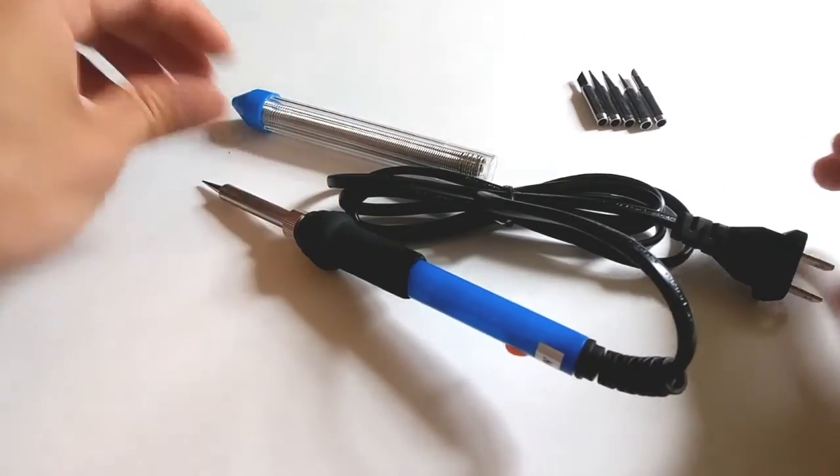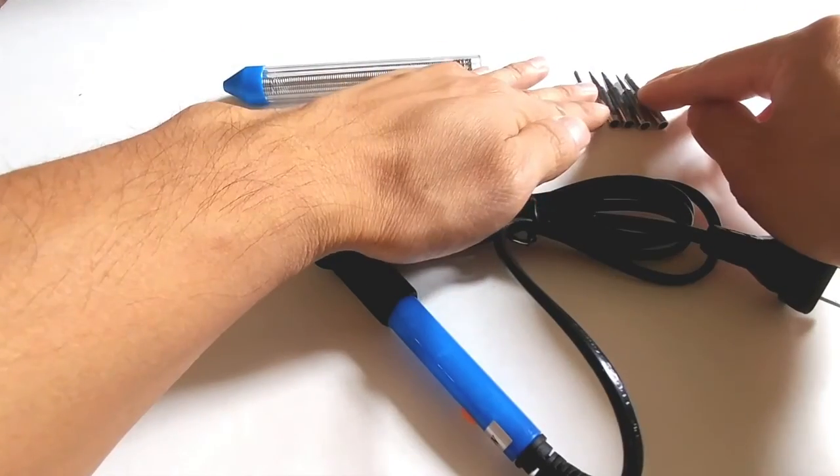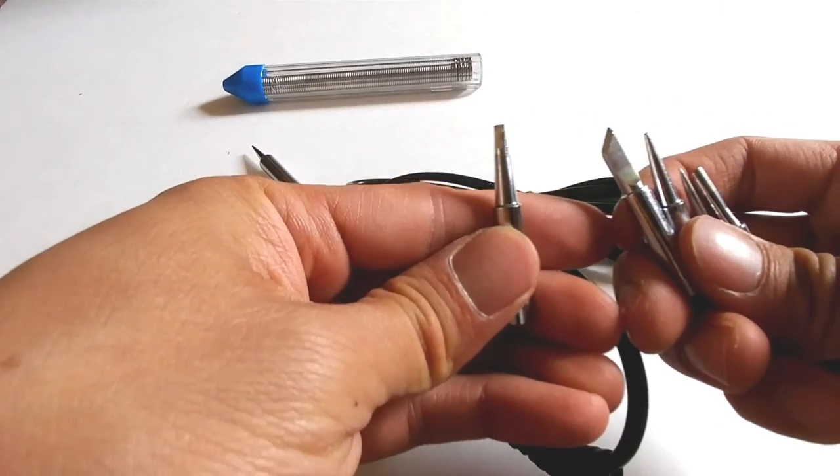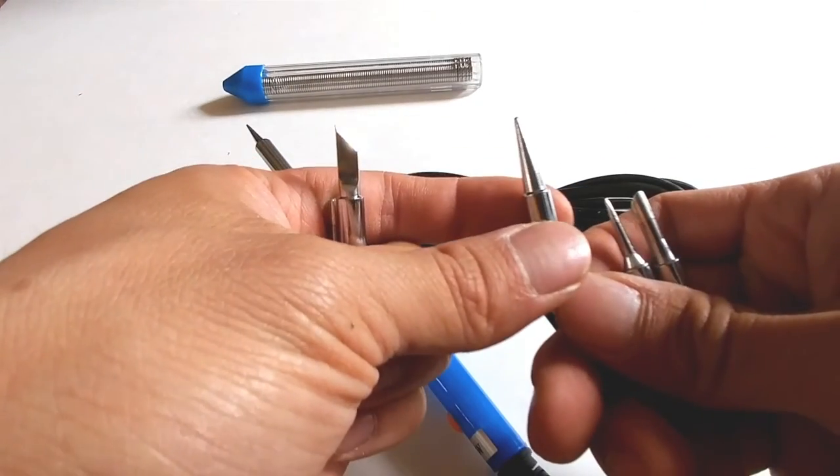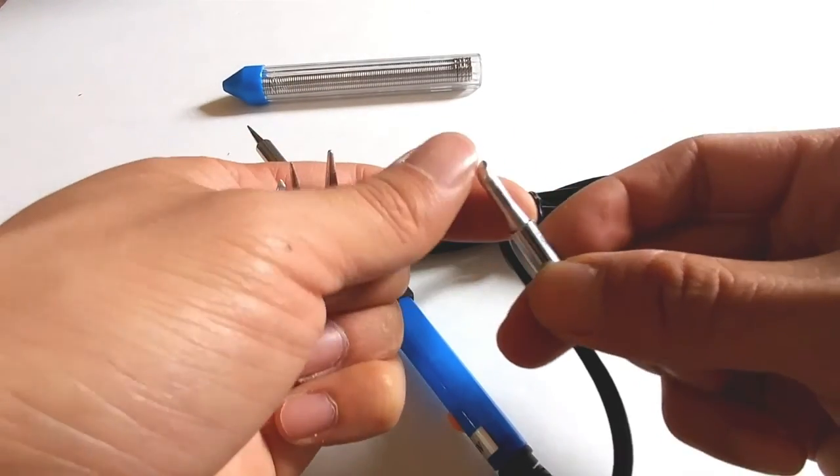You will receive the soldering iron, a tube of solder, and five additional tooltips: a tapered tip, a knife tip, a wide tip, a narrow tip, and a beveled tip.